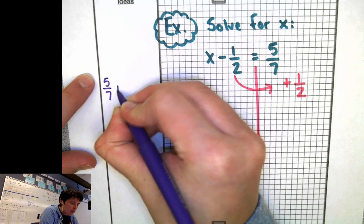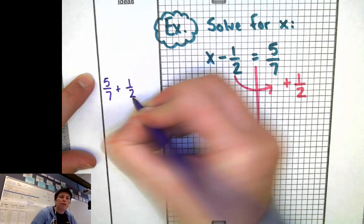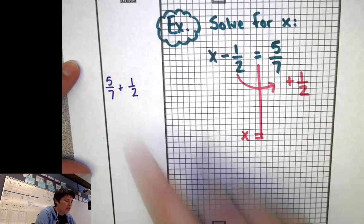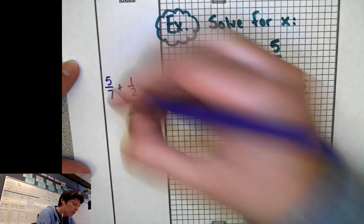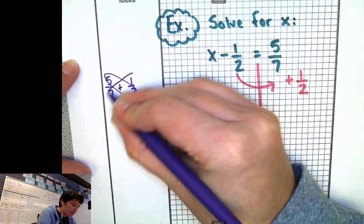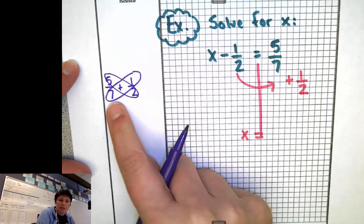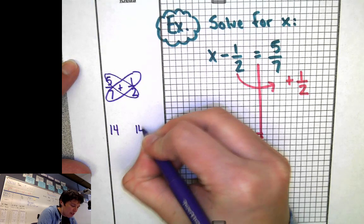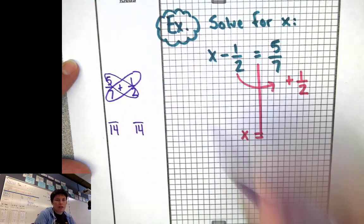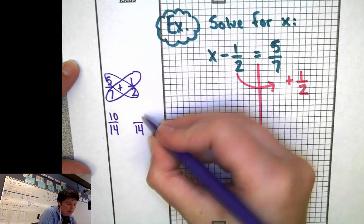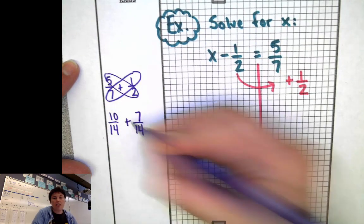Five sevenths plus one half. Well, with adding and subtracting fractions, I know I need common denominators, and these are not common. So I'm going to use that butterfly method to get my common denominators. I'm going to use seven times two and make my common denominator 14 for both of these. And then I know that five times two is 10, and seven times one is seven. And our job is to add the fractions together.